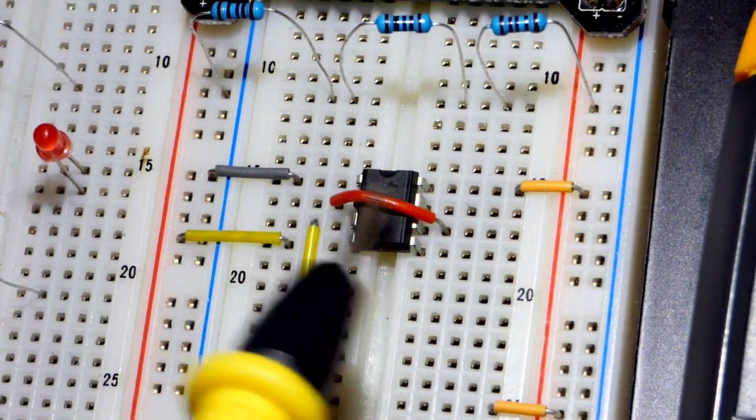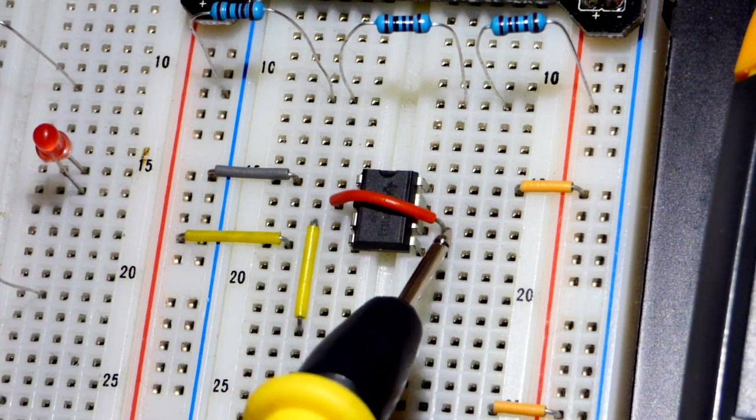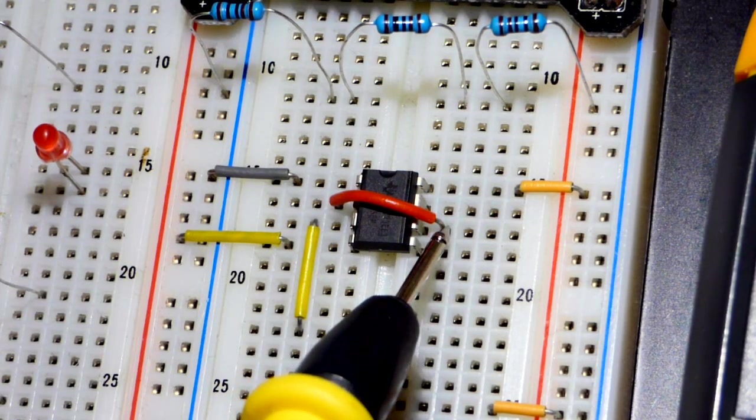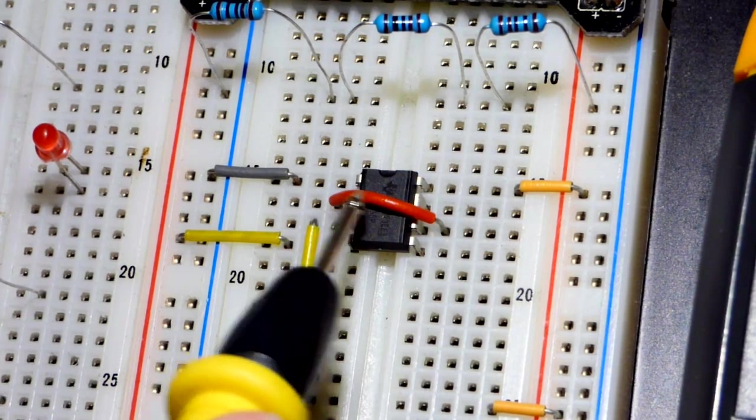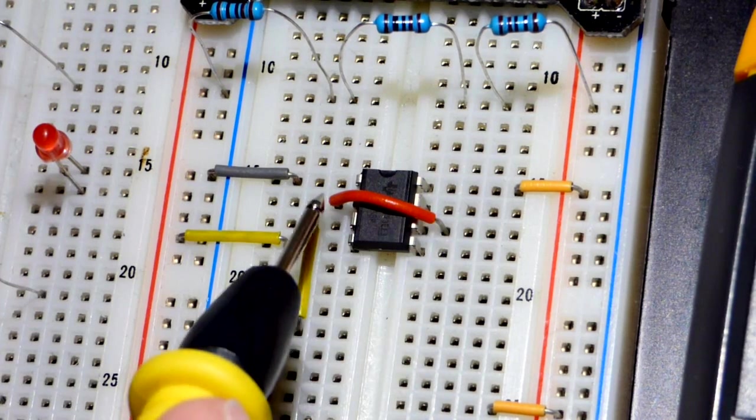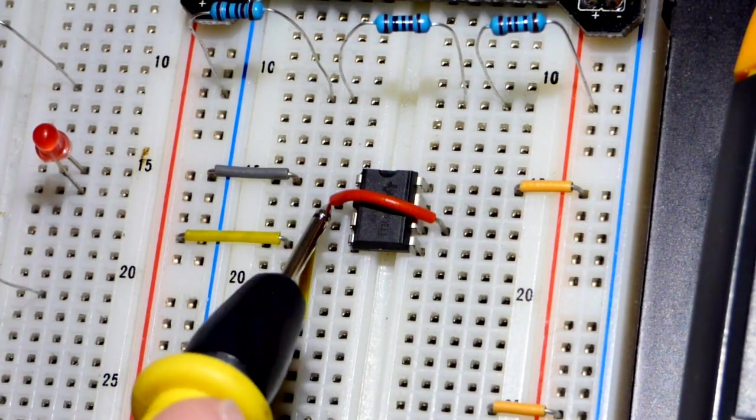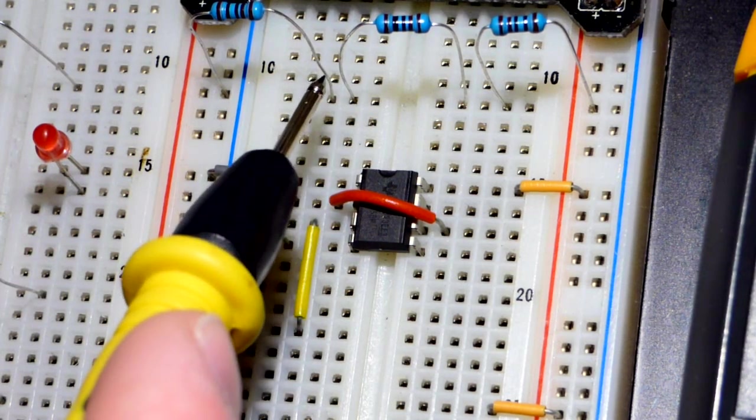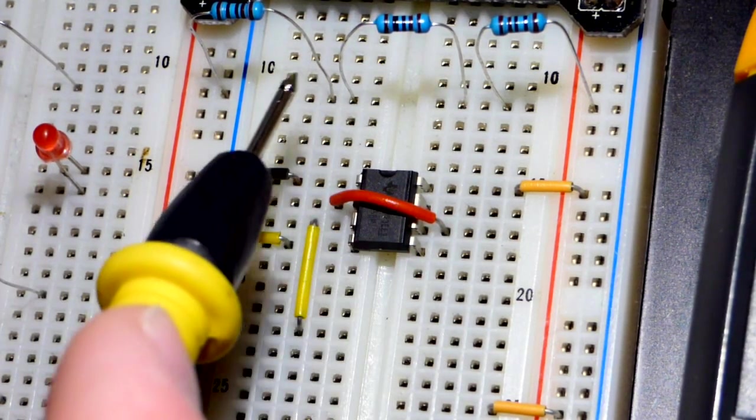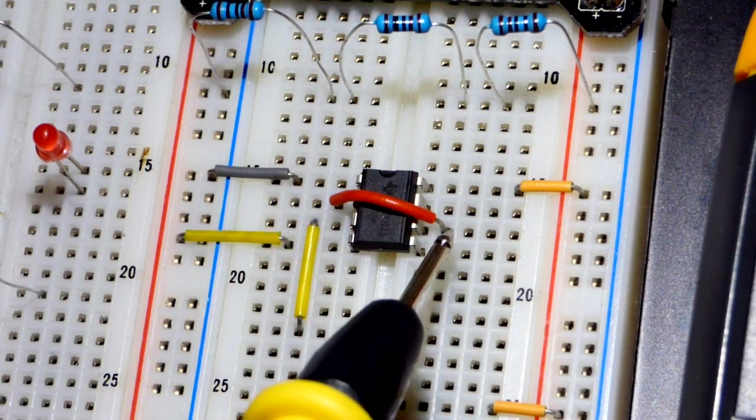Pin number two here is the trigger pin and pin number six is the threshold pin. They both monitor a voltage. The trigger pin jumps into action when it drops below one third voltage of the power supply or gets about one third voltage of the power supply.